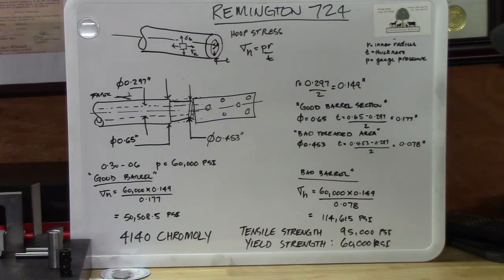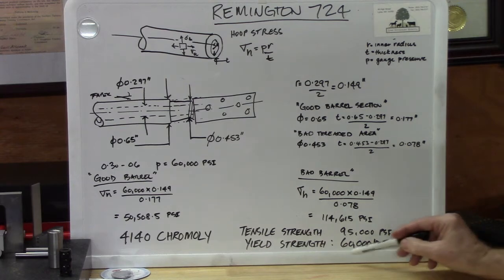So, looking up the base properties of 4140 chrome moly, it has a tensile strength of 90,000 psi and a yield stress which has a safety factor applied to it, of 60,000 psi.